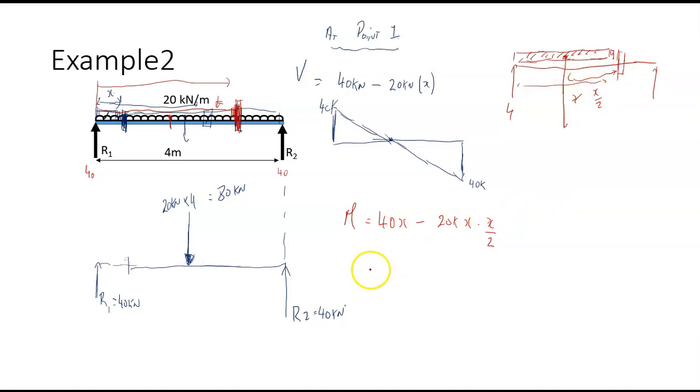Okay, so the bending moment is equal to 40x minus 20 x squared over 2, which would be minus, and that's kilonewton meters, and that's equal to 40x minus 10 x squared kilonewton meters.